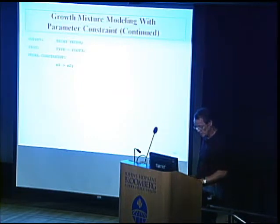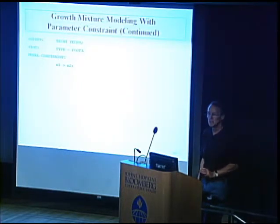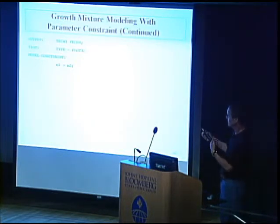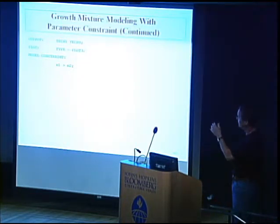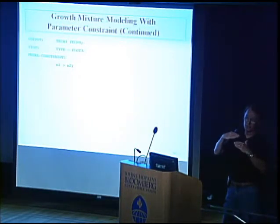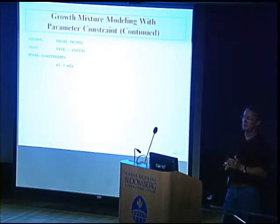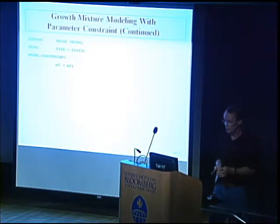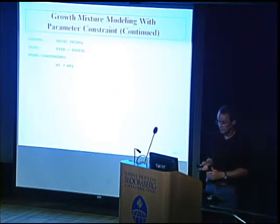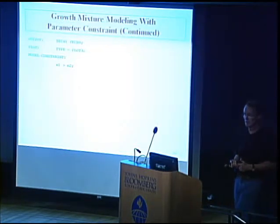Label switching is an issue in mixture modeling that makes Bayesian mixture modeling a little more difficult — you have to keep track and put constraints on the classes so labels are well defined. This doesn't constrain the model at all — you just avoid flipping the labels. Label switching happens more often when classes are less well distinguished, with less separation in means or other distinguishing parameters, and more likely with small sample sizes. But it's possible to do growth mixture modeling without encountering this issue.